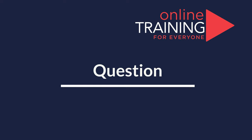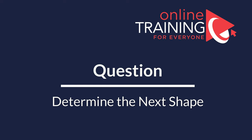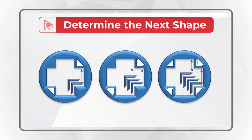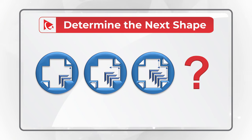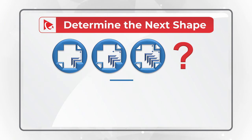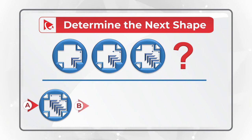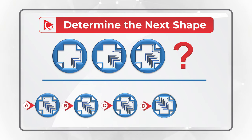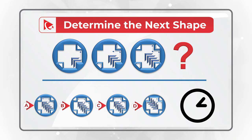Now I have a question for you to test your skills. You're presented with a series of objects and you need to determine the next object in the sequence. Please choose one of the following four choices: A, B, C, and D. Post your version in comments and I'll give you my feedback. Thanks for participating and good luck.